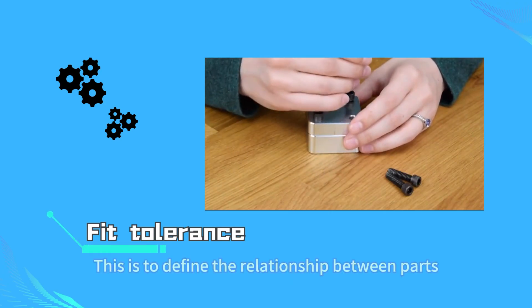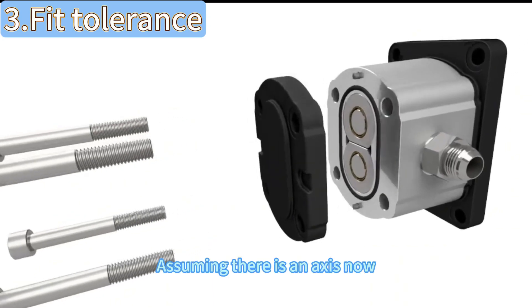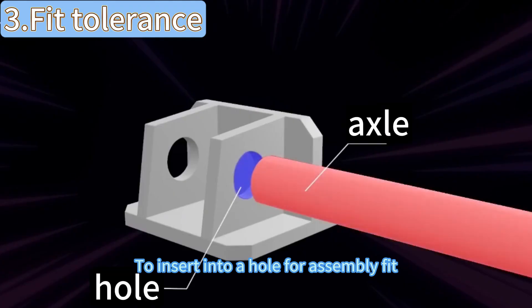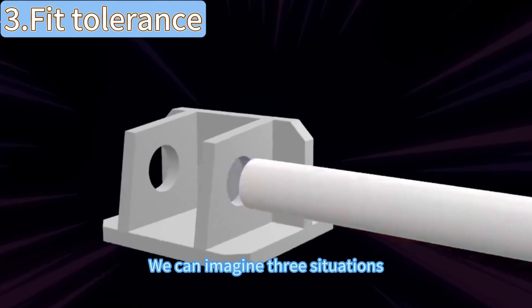Finally there is the fit tolerance. This is to define the relationship between parts cooperation status. Assuming there is an axis now to insert into a hole for assembly fit, we can imagine three situations.